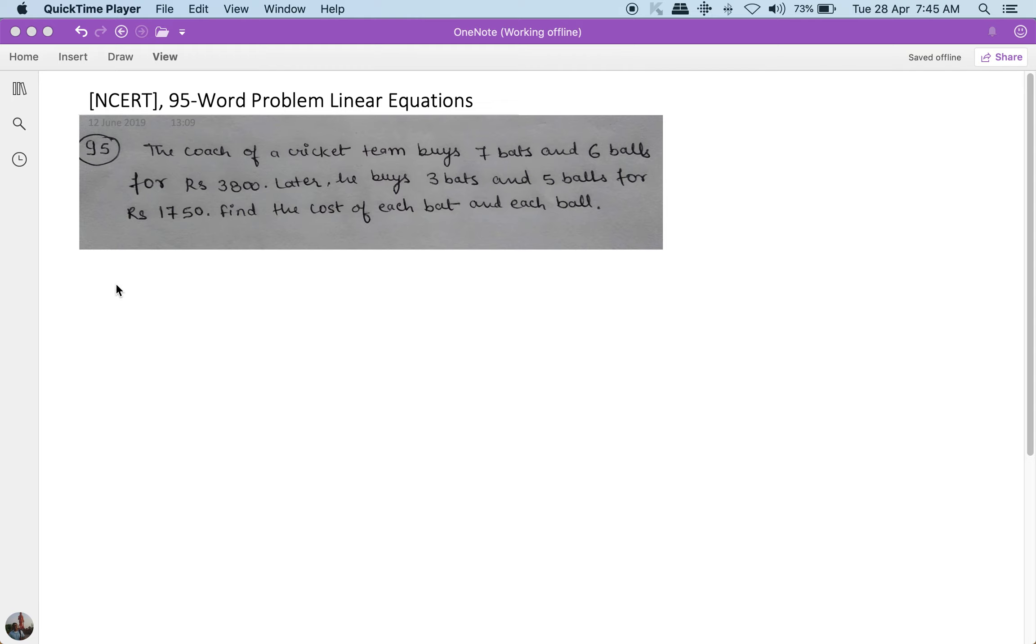The coach of a cricket team buys seven bats and six balls for 3800 rupees. Later, he buys three bats and five balls for 1750 rupees.